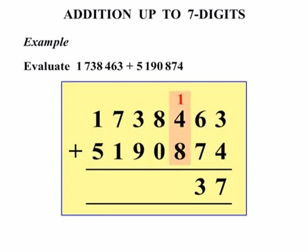The next column, 1 plus 4 is 5, plus 8 is 13. So we put our 3 down, carry the 1. The next one, we've got 1 plus 8 is 9, and 0 stays as 9.